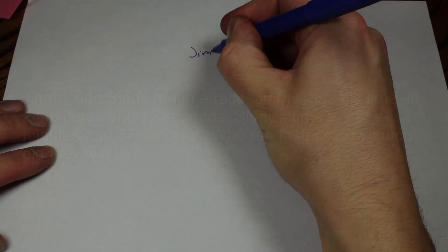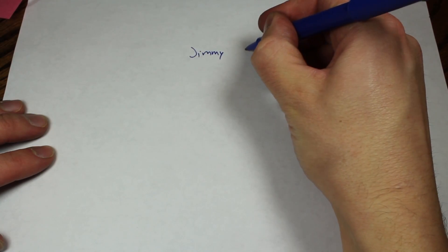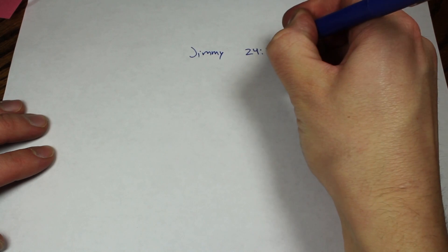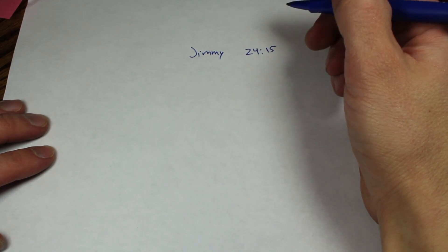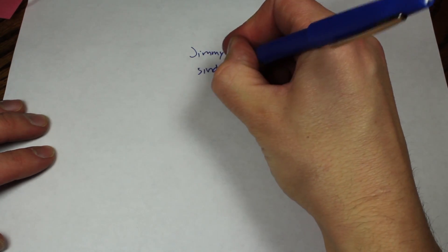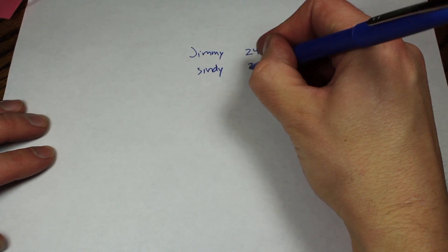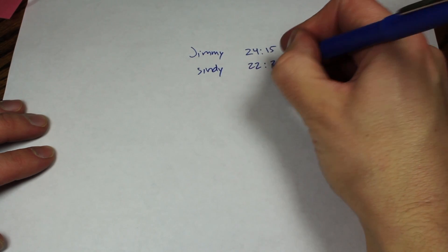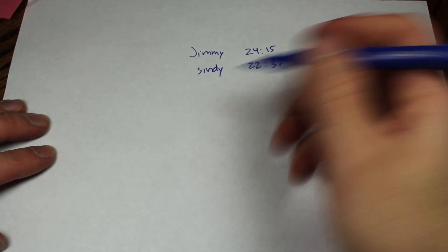So like I said, Jimmy ran his race in 24 minutes and 15 seconds, and Cindy, on the other hand, ran her race in 22 minutes and 37 seconds. So again, we're going to draw a number line.